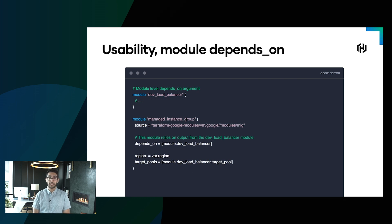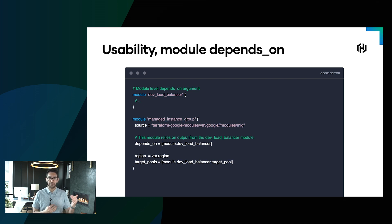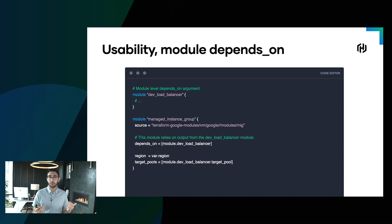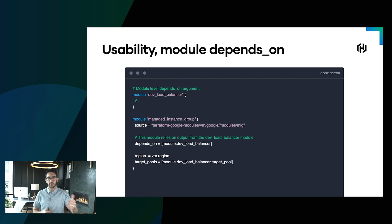The next one is the ability to express a depends_on construct with a module as well. Much like resources, generally Terraform is smart enough to implicitly figure out dependencies. Based on your referencing of one thing onto another, Terraform will figure out the correct order to create things. That's the right approach 99% of the time, but 1% of the time we need to be more explicit — we need to tell Terraform this thing must be done first before these other actions will be able to be successful.